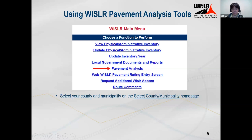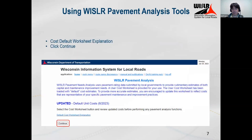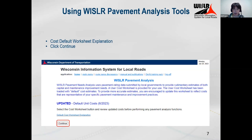Every time you open pavement analysis, you will always see this message at the front. This message explains how the cost worksheet works — it lets you know that all of these tools require you to have a cost worksheet set up, which is essentially a mapping from pavement type and rating to how much it costs to perform the maintenance or treatment at that rating. There's a link that says 'default cost worksheet explanation' which gives an even more detailed explanation.